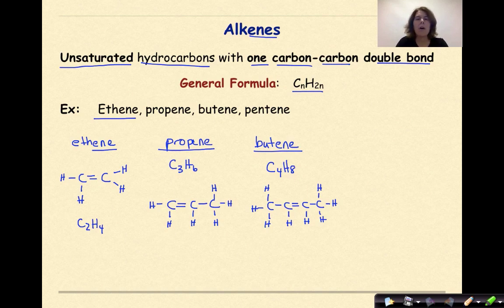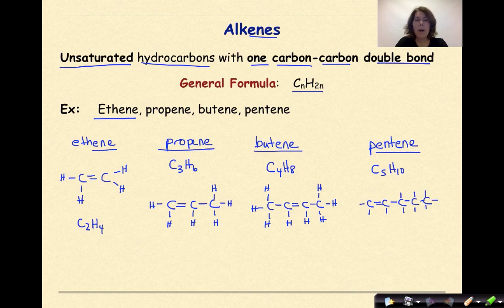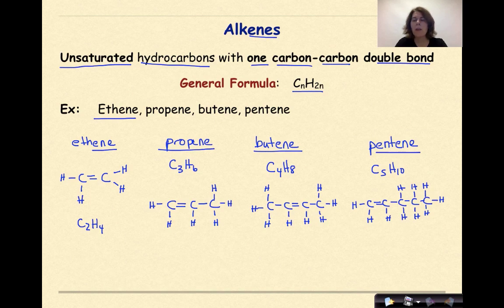Let's look at our last example of alkenes: pentene. Pent means five, so C5H10 — H2N means H10. We put down five carbons, put a double bond between one pair, add single bonds for the rest, then fill in hydrogens to make sure each carbon has four bonds. Counting up the hydrogens: ten. So this is C5H10 and a representation of one type of pentene.